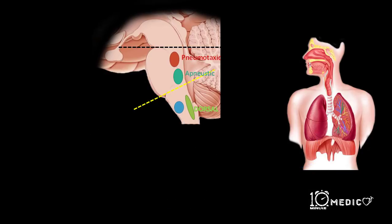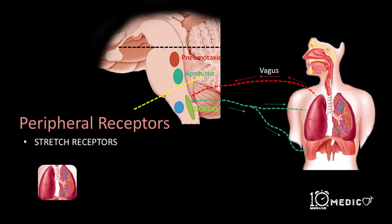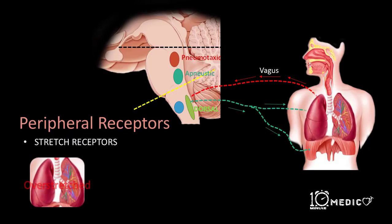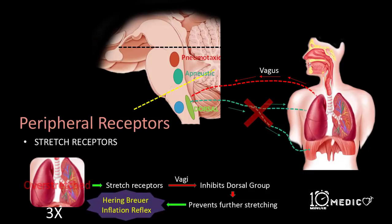The peripheral system contains receptors in the lungs such as stretch receptors, which carry information to the brainstem via the vagus and inhibit the dorsal group of neurons. Whenever there is overinflation of the lung, these receptors are activated and inhibit the dorsal group of neurons, thereby preventing further stretching of the lung. This is a protective mechanism called the Hering-Breuer reflex, which acts only when the lungs are inflated about three times the normal tidal volume.